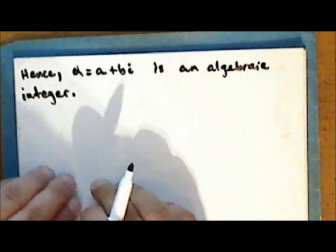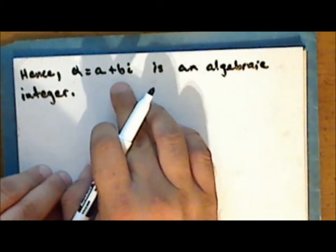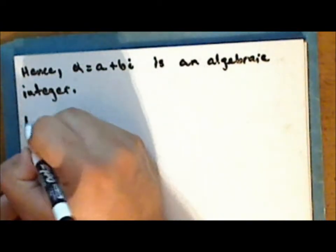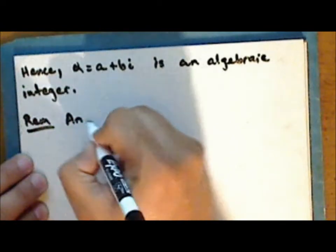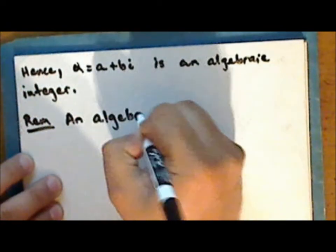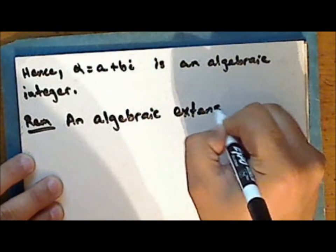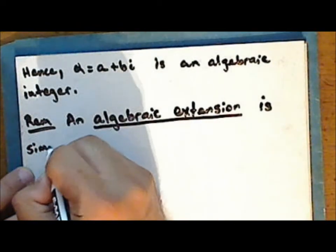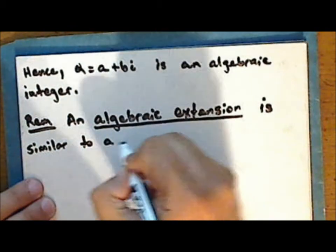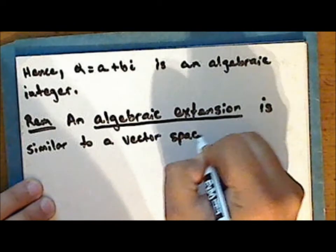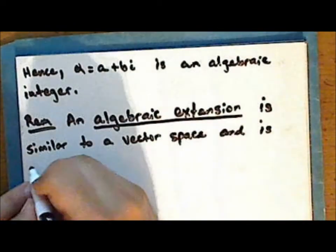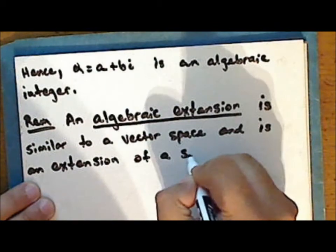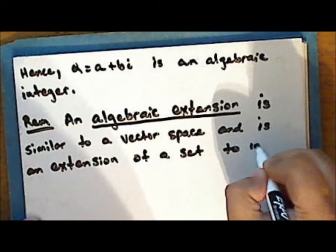So let's look at an example. Let the number alpha be the number a plus b times i, where a and b are integers. Then alpha minus a is equal to b times i. If we now square both sides, we have alpha squared minus 2 times a times alpha plus a squared equals b squared times i squared.